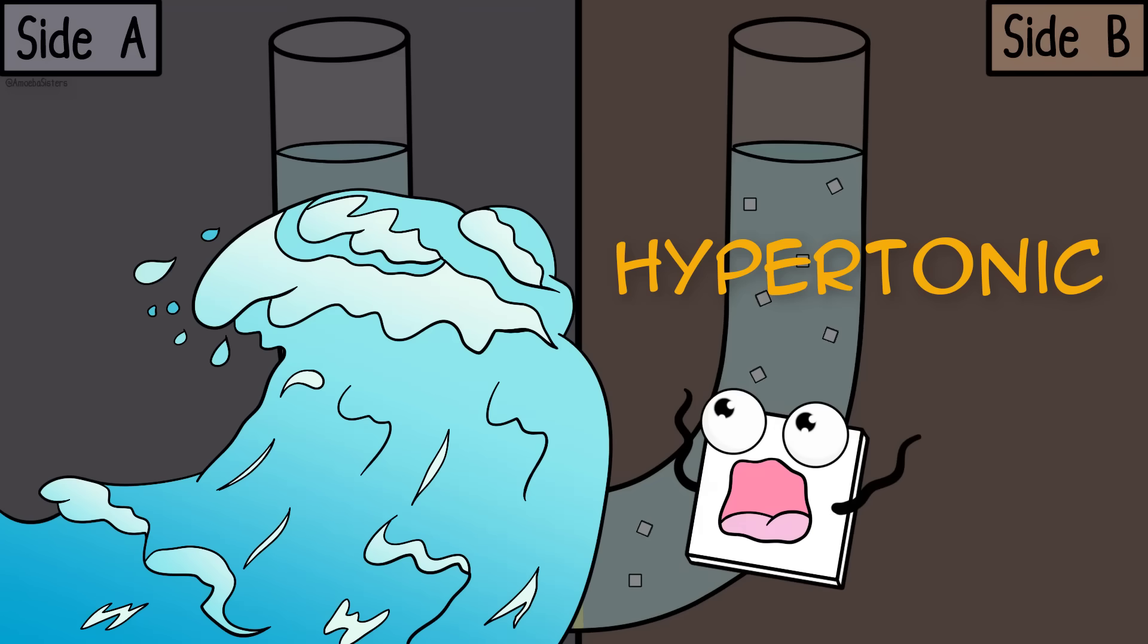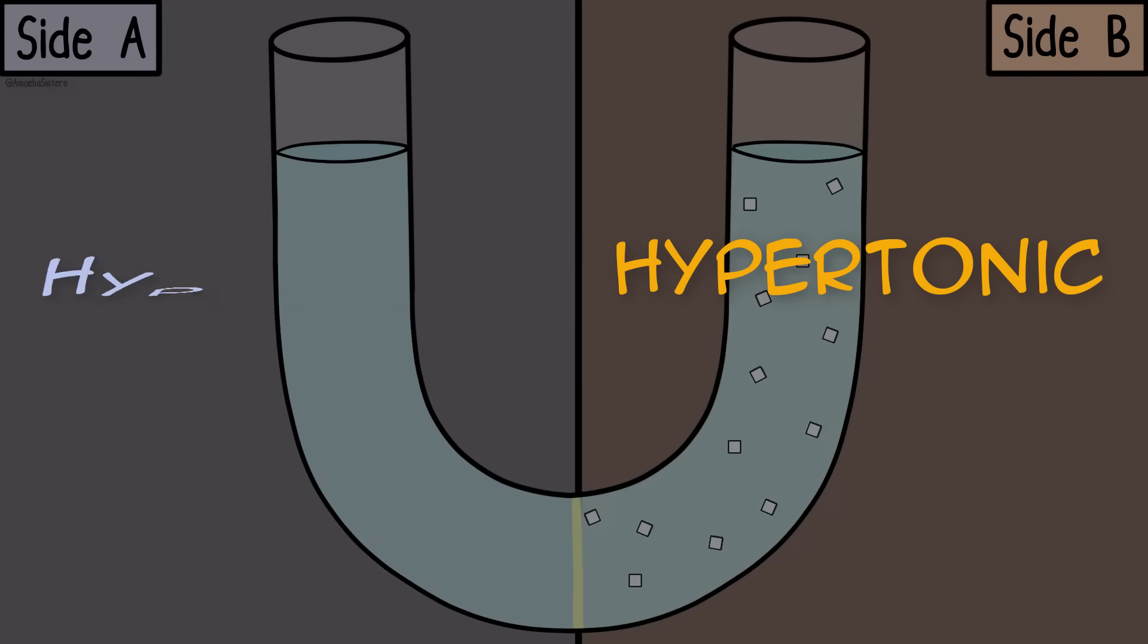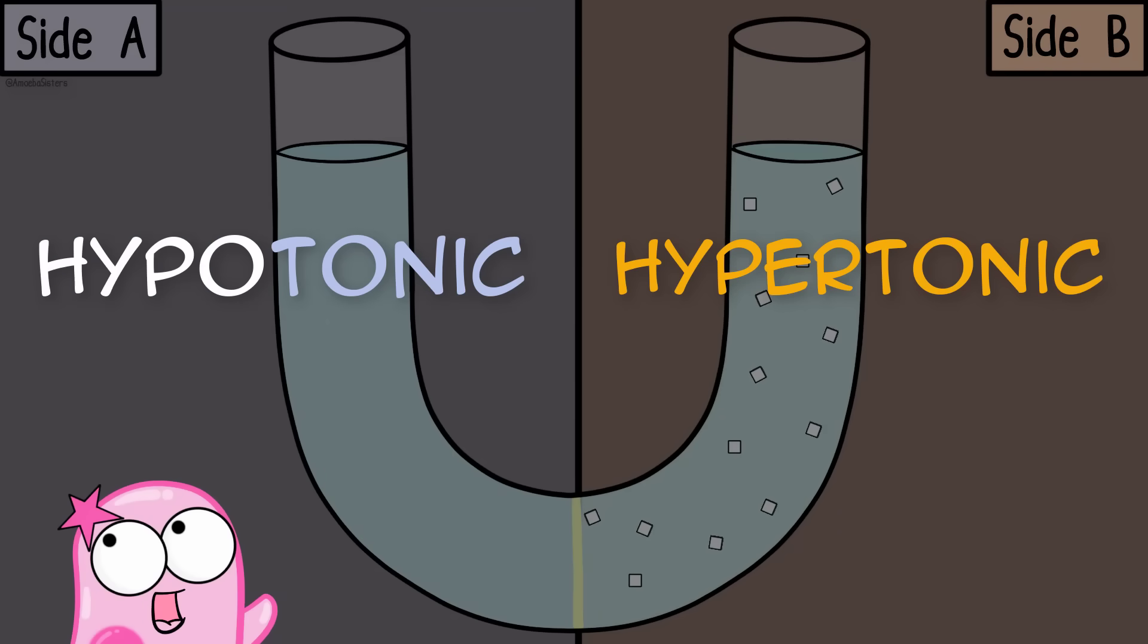In osmosis, water moves to the hypertonic side. We say side A is hypotonic. Hypo rhymes with low which helps me remember that it's the low solute concentration when compared to side B.